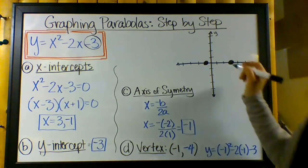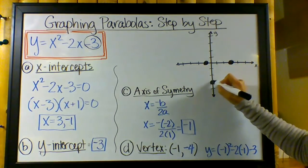It's always that constant or the plain old number at the end of the equation. So here it's negative 3. So let's put that on here. 1, 2, 3. Okay.